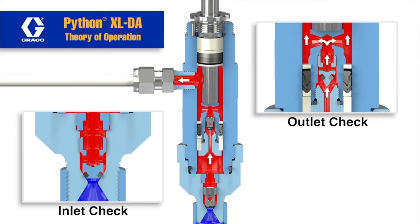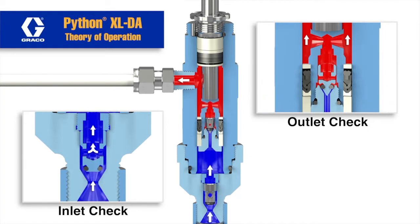Now let's run the animation again and stop it in the upstroke position. On the upstroke, the bottom check valve opens allowing fluid to fill the depressurized or blue area of the fluid section.